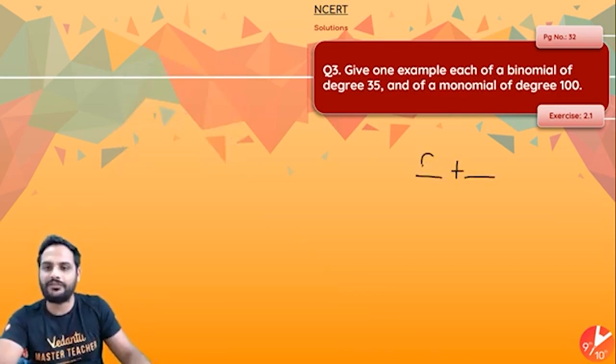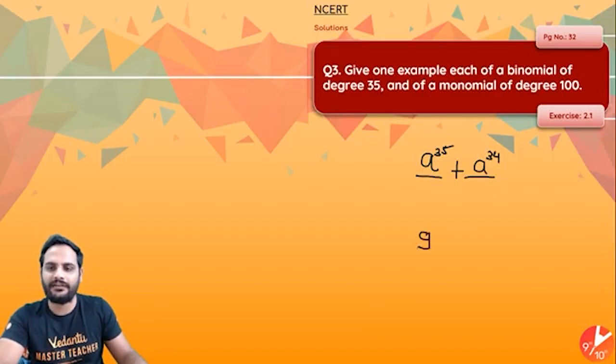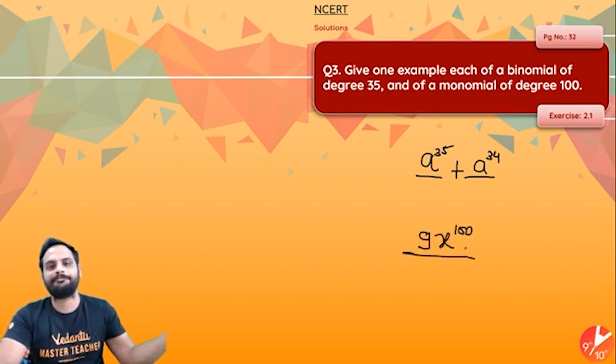Binomial means two terms and degree should be 35. So maximum power, let's say a is my variable, and then any other power 34, 32, anything you want. So this is a binomial of degree 35. And monomial of degree 100, let's say 9 times x raised to the power 100. So only one term.